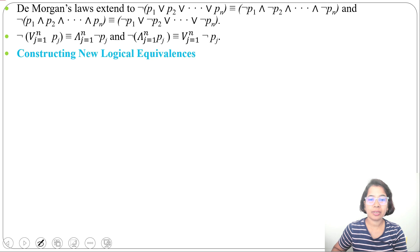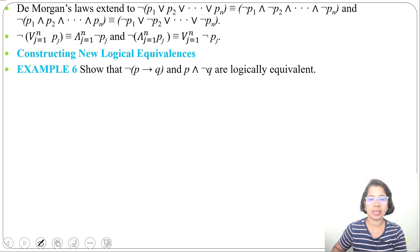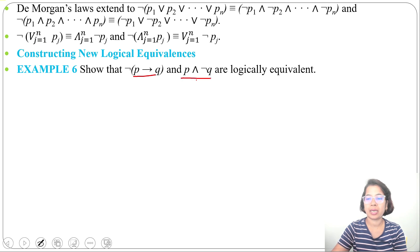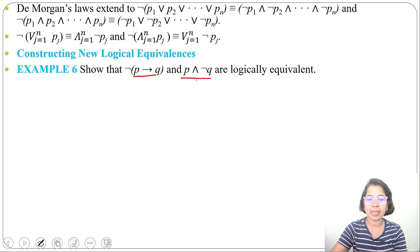Now we'll construct some new logical equivalences. We don't need to make the truth table — by just using existing logical equivalences, we can prove that two compound propositions are equivalent. Example 6: show that negation of (p implies q) and (p and negation q) are logically equivalent. You can create a truth table, and if truth values are the same, you can say these two are logically equivalent. Now I'll try to match them without creating the truth table, starting from negation of (p implies q).